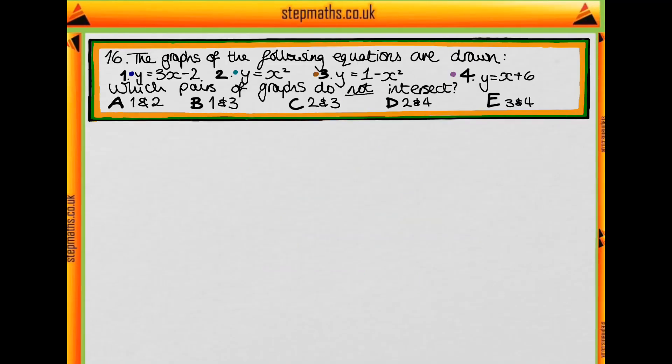For this question, we're given four graphs labeled 1, 2, 3, and 4, and they're graphs of y equals x. We want to know which pairs of graphs do not intersect. We're given five possible pairings.